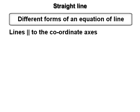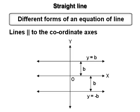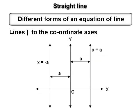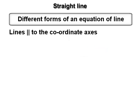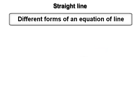Lines parallel to the coordinate axes: if a line is parallel to the x-axis, then its equation is of the form y = b. If a line is parallel to the y-axis, its equation is of the form x = a, where a and b are real numbers. Standard forms for the equation of a line are as follows.